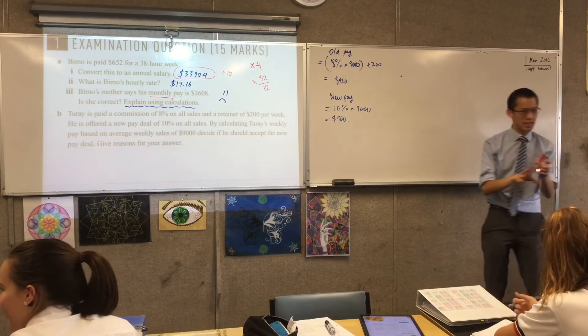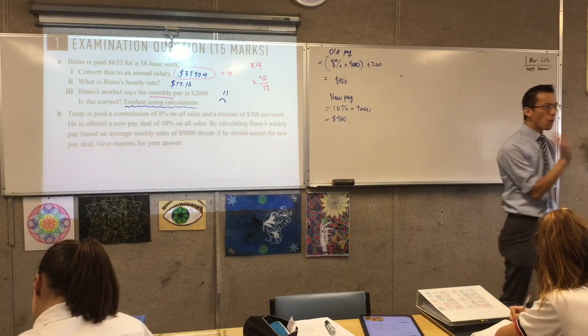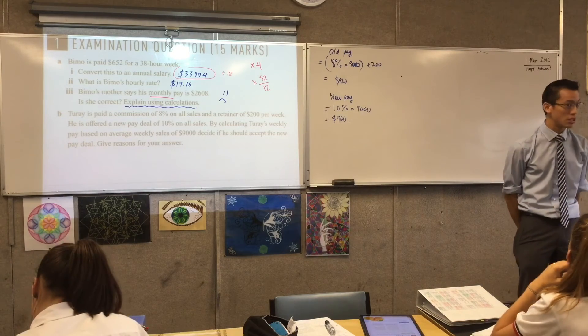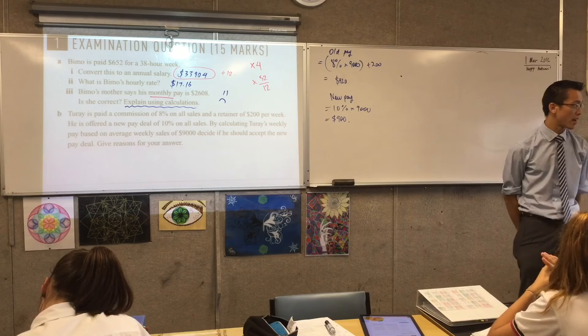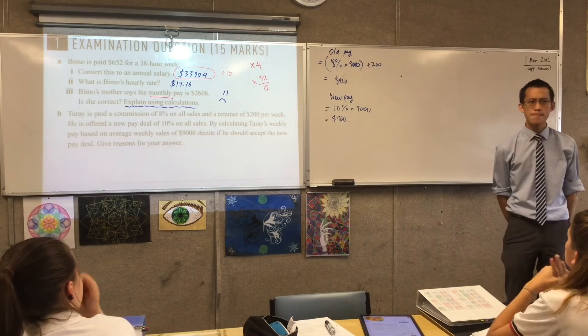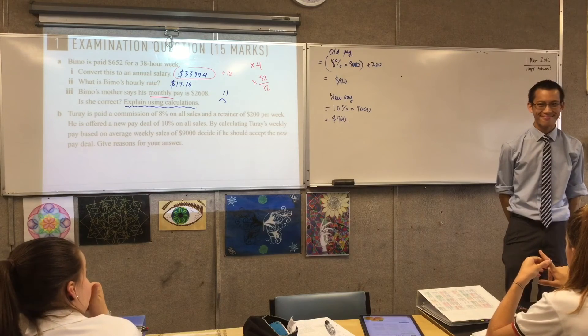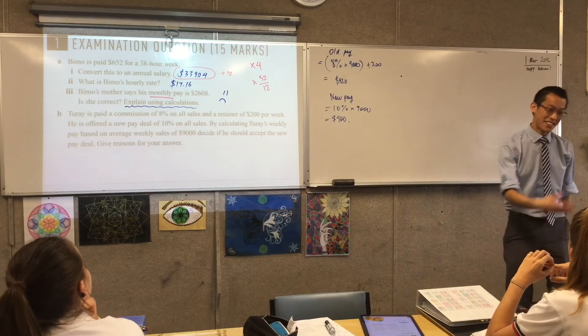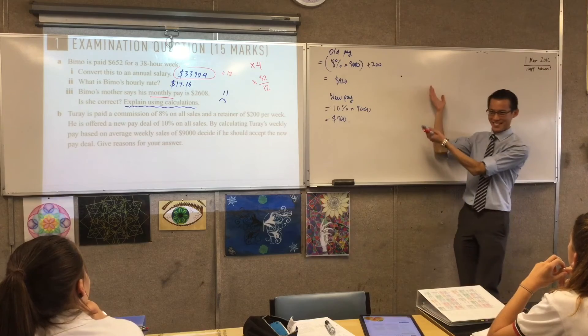Yeah. Yeah, just a quick question, just to extend, I'm not going to do it on the board, but what would have to change in order to make the new situation actually better than the old situation? Like, it's a $20 difference right now. What would have to change for it to improve? $20. So, the easy thing is, well, if you give me a $20 retainer, that'll be fine.